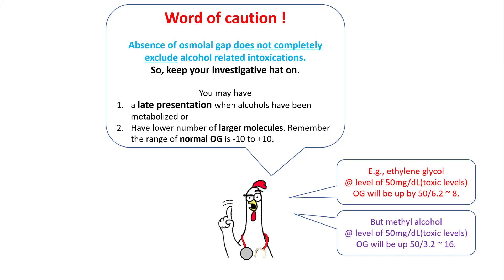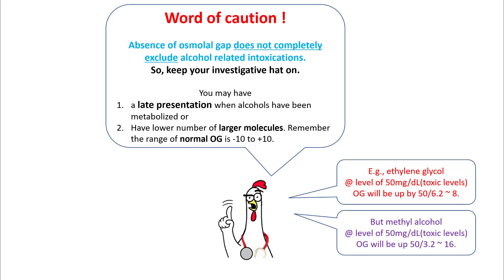For example, in ethylene glycol toxicity at levels of 50 milligrams per dL — which are pretty toxic — the osmolal gap contribution would be 50 divided by 6.2, which equals 8. So if your baseline osmolal gap was 0 and you have toxic levels of ethylene glycol, your osmolal gap will still only be 8. Smaller molecules contribute more to the osmolal gap — methyl alcohol, being a smaller molecule, at the same level of 50 milligrams per dL, would raise the osmolal gap by 16.